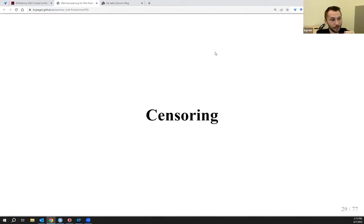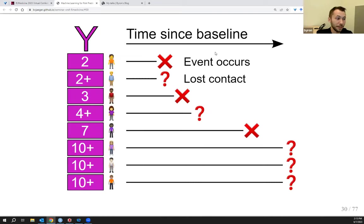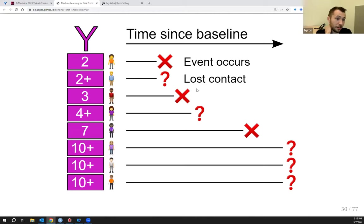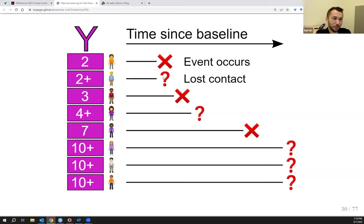This is why we have to talk about risk prediction instead of just straight probability prediction. Censoring means we have incomplete data about the outcome. This happens when you start a study with an outcome like development of hypertension in a time-to-event framework. Over a 10-year study, some people have the event before 10 years lapses, but others drop out or you lose contact with them. You don't know whether they had the event during the 10 years or not.